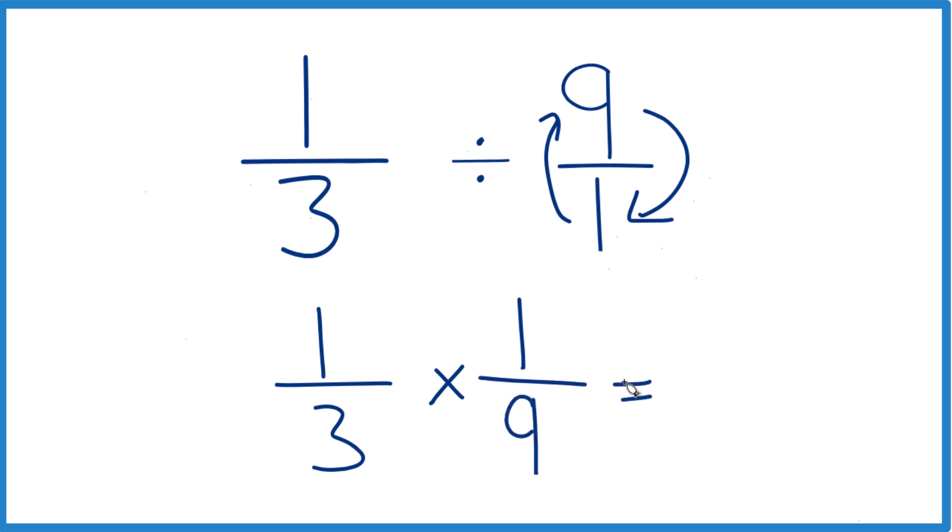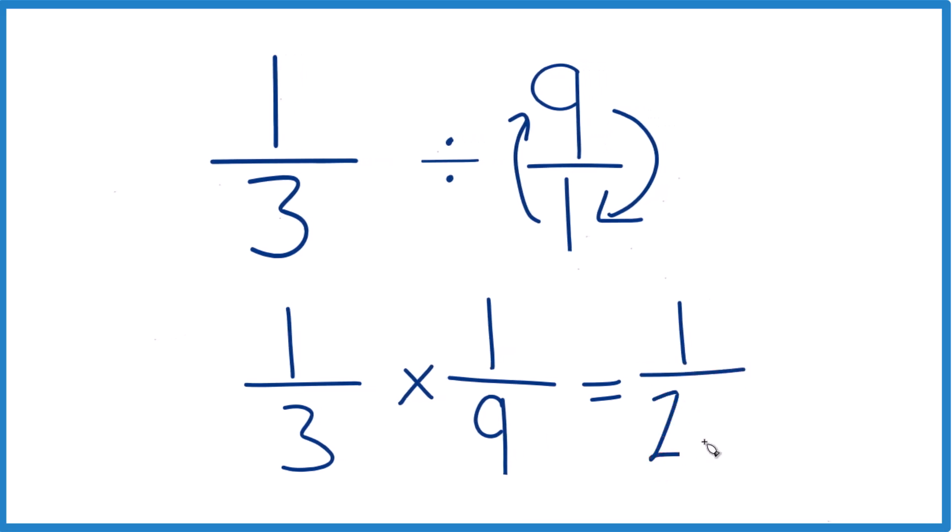Now with fractions, we just multiply the numerators. One times one is one, and then three times nine, that's 27.